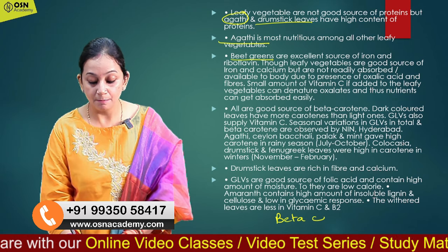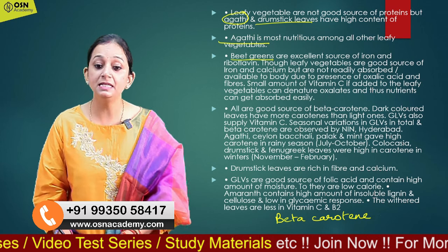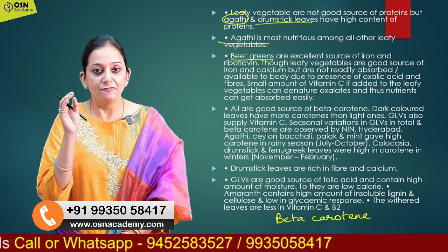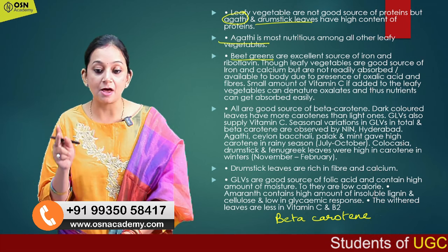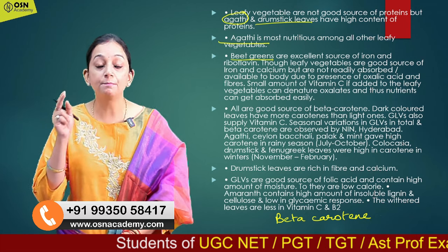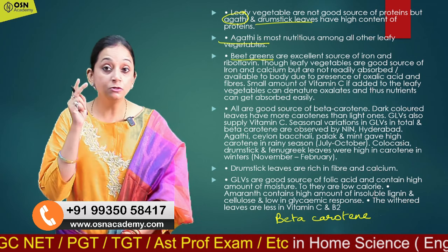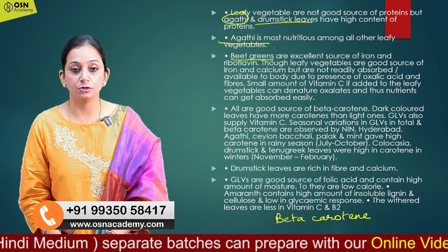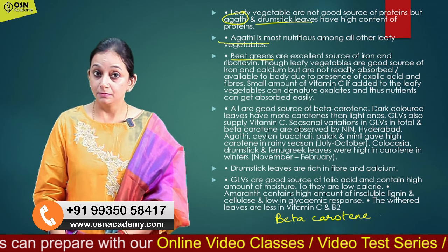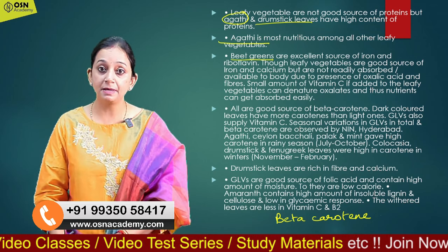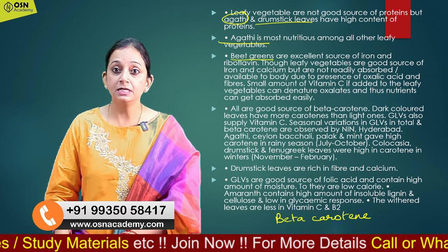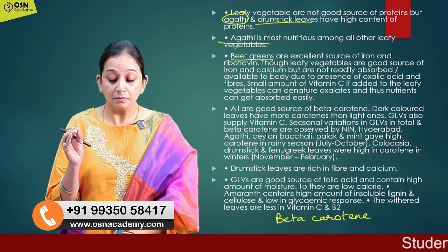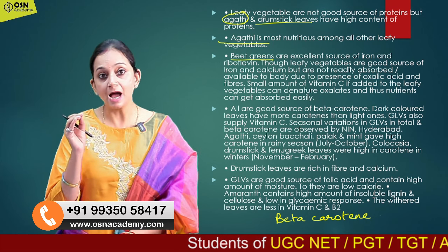If we talk about beta-carotene — remember beta-carotene is a carotenoid and a form of vitamin A. There are two types of vitamin A sources: one is beta-carotene, which comes from vegetarian food, and the other is retinol, which comes from non-vegetarian food. Beta-carotene is found in good amounts in all leafy vegetables. Leafy vegetables are also good in both iron and calcium.